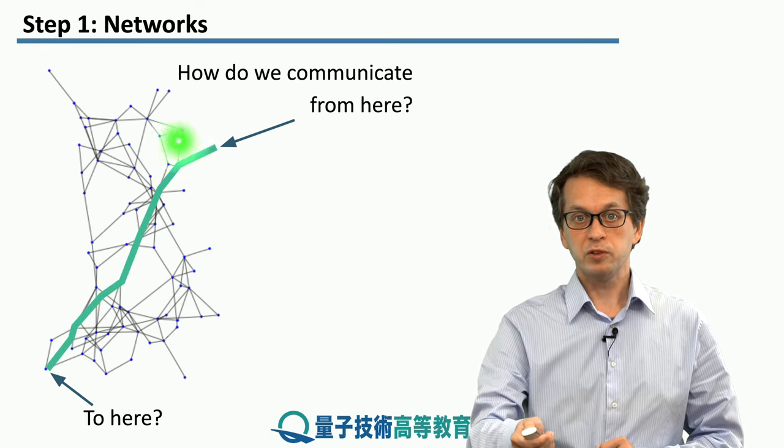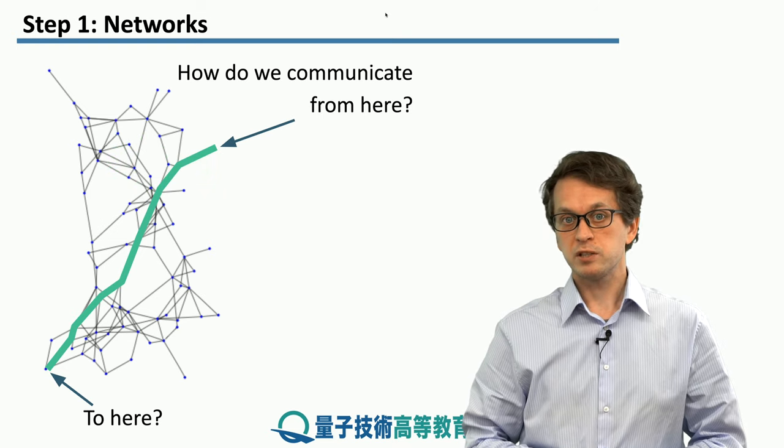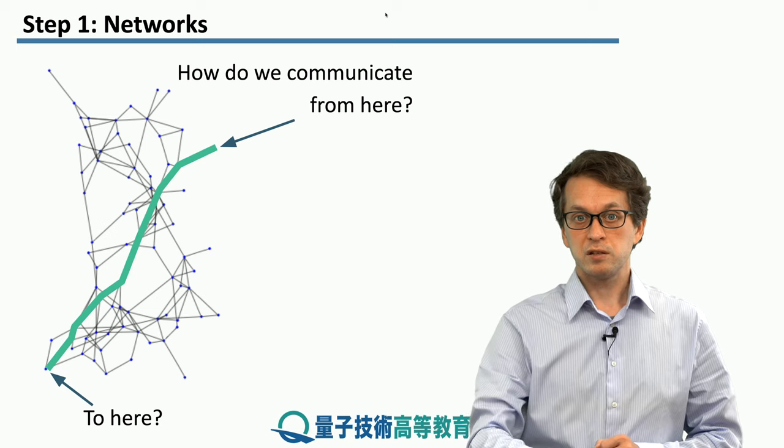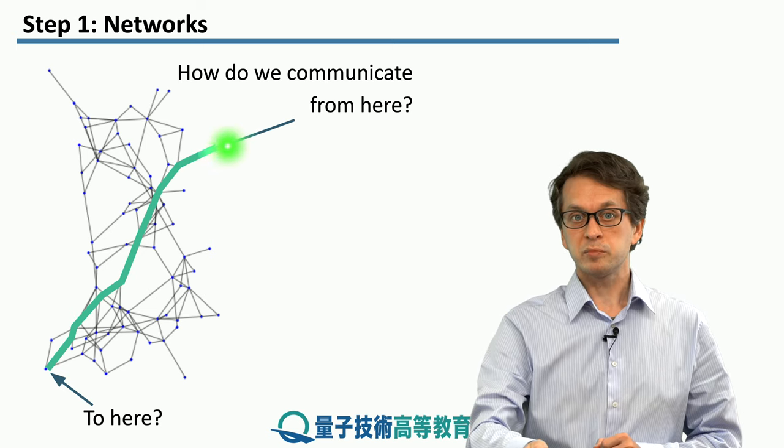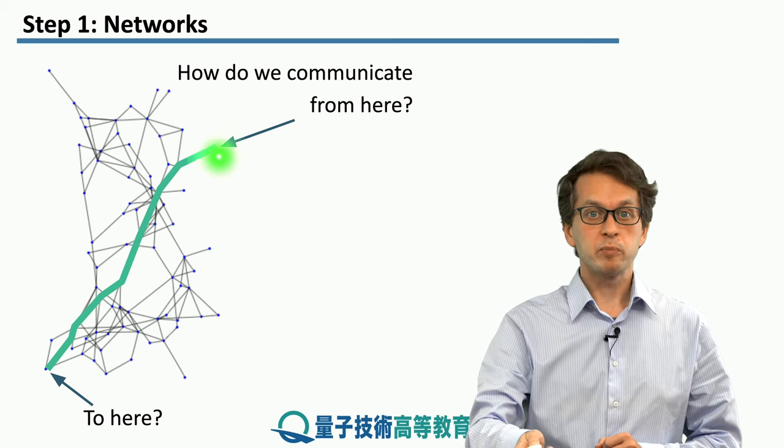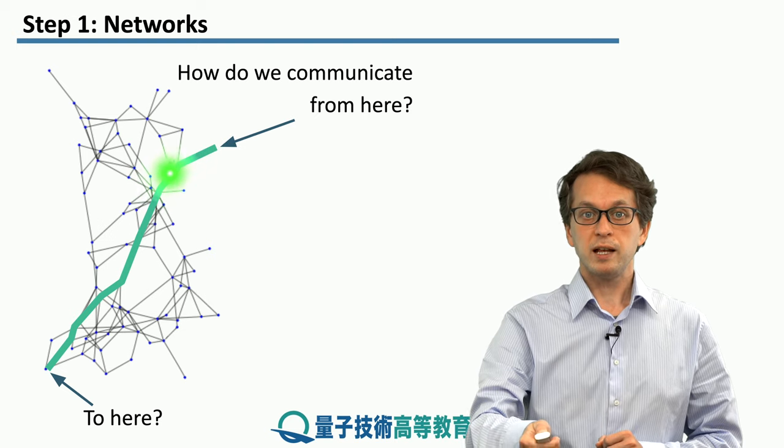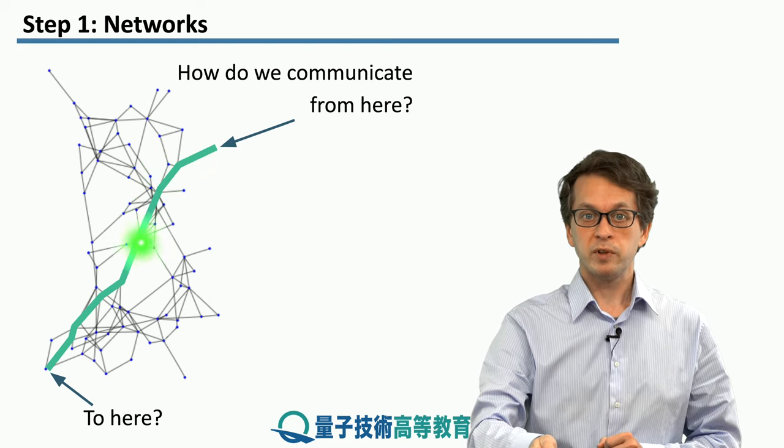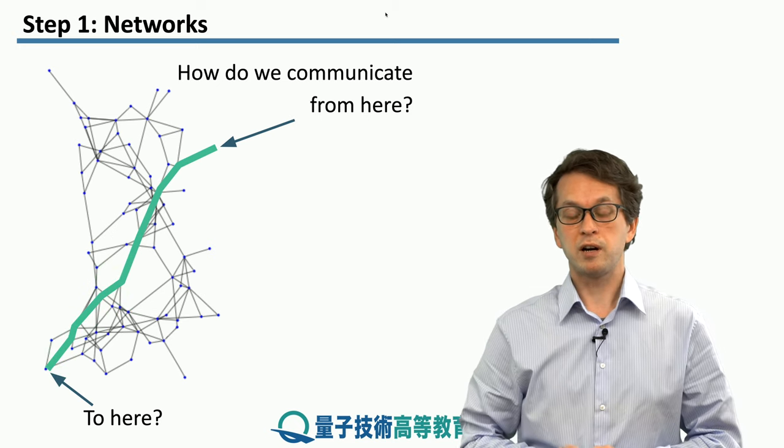If we want to do it in a quantum way, what do we do? We saw that one way of transferring quantum information is via teleportation. So we could say that we can have an entangled pair between the neighboring nodes and use that to teleport our quantum information from this node onto its neighbor. And then we can hop from neighbor to neighbor all the way across to the target node.